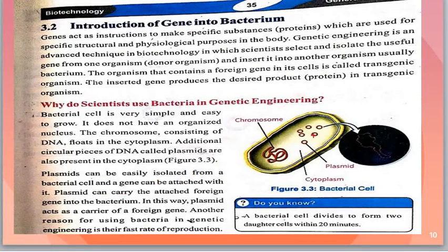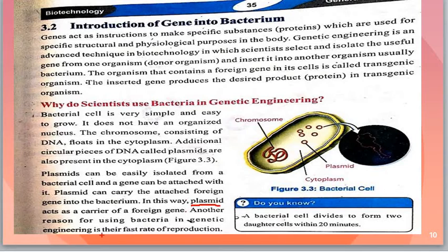Plasmid can be easily isolated from a bacterial cell. We can cut this circular piece and isolate it from the donor cell. We attach a piece of the donor gene to it. Plasmid can carry foreign genes into the bacteria. In this way, plasmid acts as a carrier of the foreign gene — it transfers the gene from the donor into the bacterial cell.